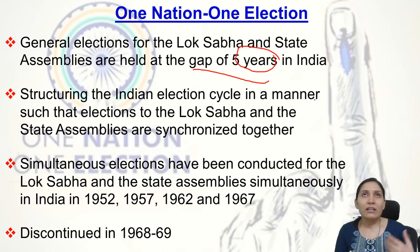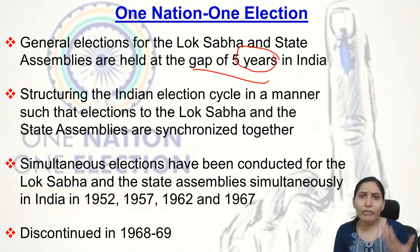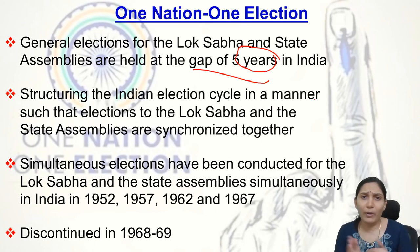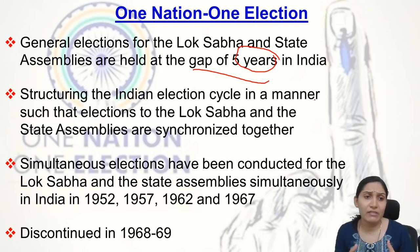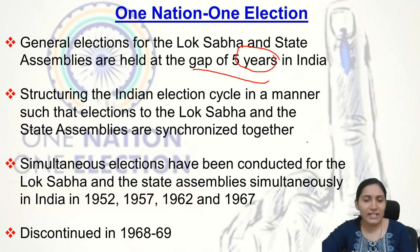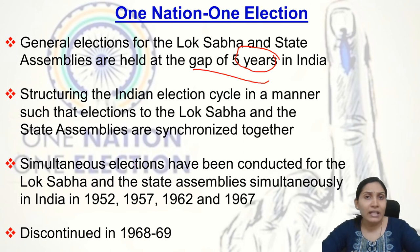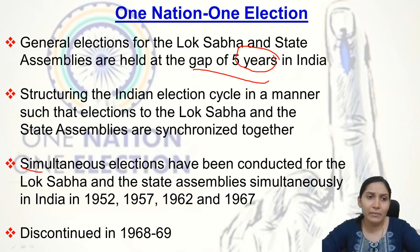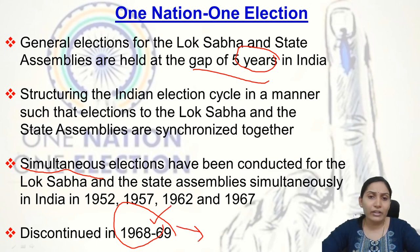Because of coalition governments, many governments fell in the past at both the central and state levels, which created this gap. Historically, India did conduct simultaneous elections — in 1952, 1957, 1962, and 1967, elections to the Lok Sabha and State Assemblies were held simultaneously. However, this was discontinued after 1968-69 with the introduction of the coalition era, when governments at both levels frequently lost confidence votes.